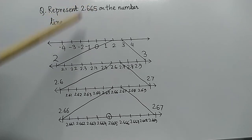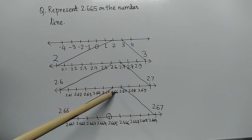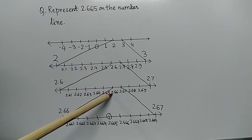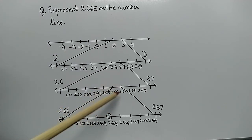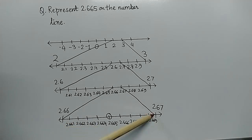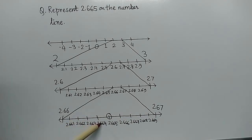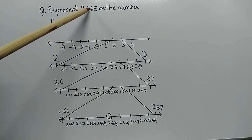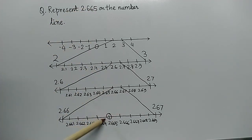We have reached 2.66 so far, meaning 2.665 lies between 2.66 and 2.67. We magnify this region again, writing 2.66 on one end and 2.67 on the other. The numbers in between are 2.661, 2.662, 2.663, 2.664, 2.665, 2.666 — and we have found our number 2.665, which I have marked with a circle.